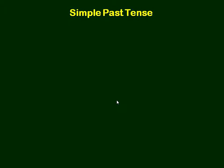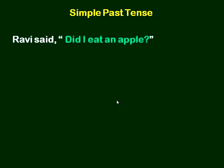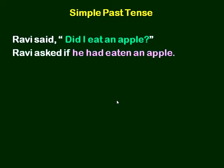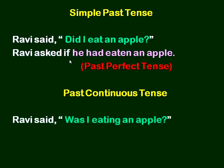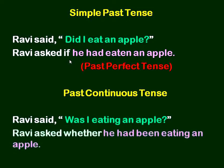Simple past tense example: Ravi said, 'Did I eat an apple?' Ravi asked if he had eaten an apple. Remember, we can use 'if' for 'whether' here. So the simple past becomes past perfect tense. Past continuous tense: Ravi said, 'Was I eating an apple?' Ravi asked whether he had been eating an apple. So the past continuous tense changed into past perfect tense.